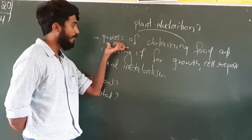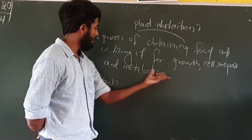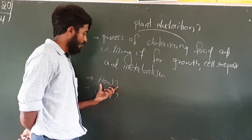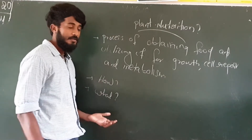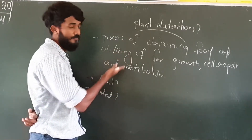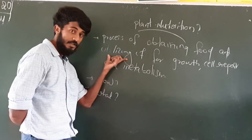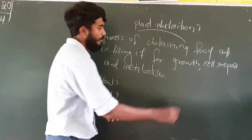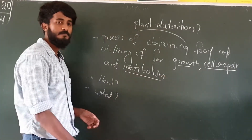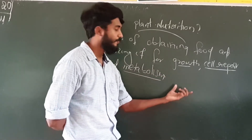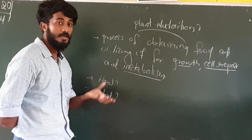So what is plant nutrition? It is the process of obtaining food and utilizing it for growth, self repair, and metabolism. So how do they get food — that we will discuss later. And they utilize that food for growth, self repair, and metabolism. Plants utilize food for growth, self repair, and metabolism.